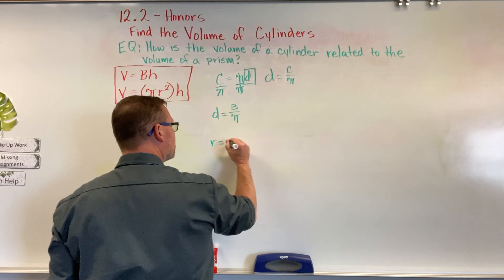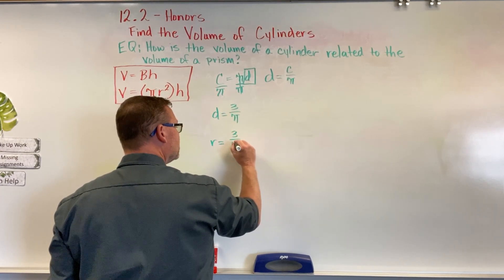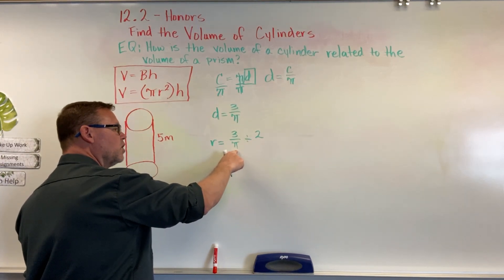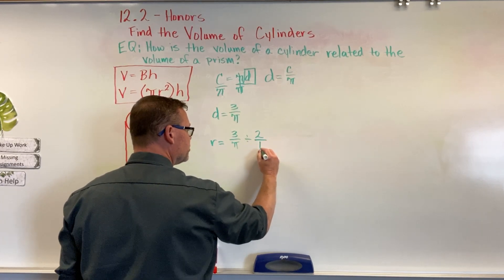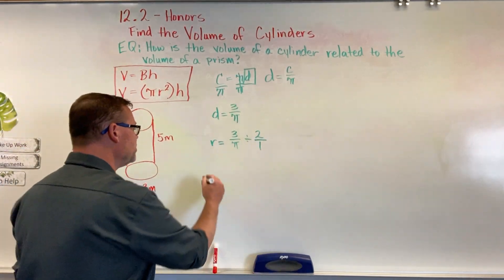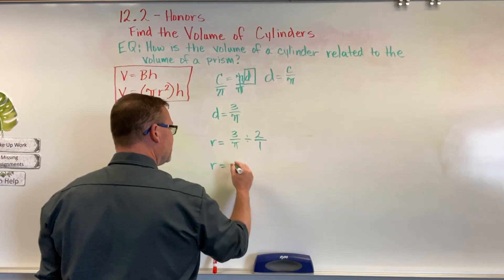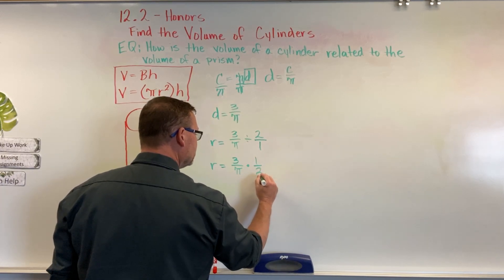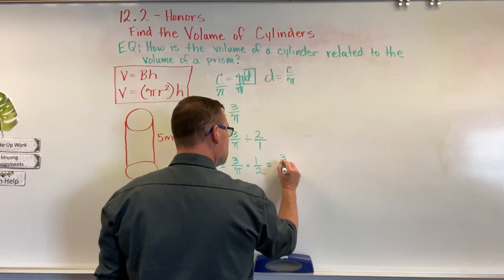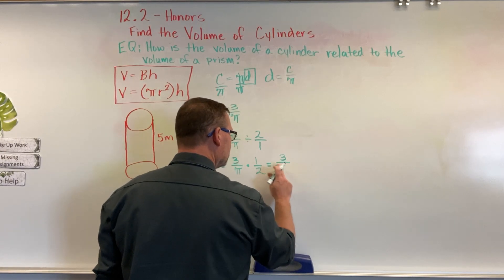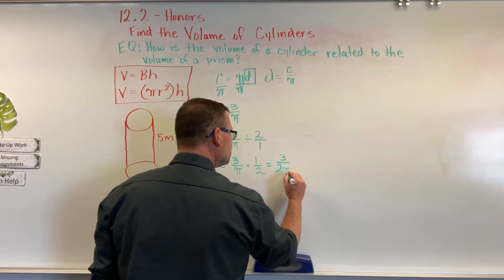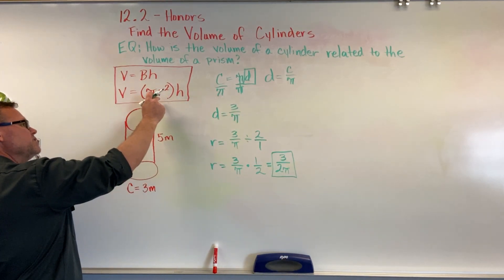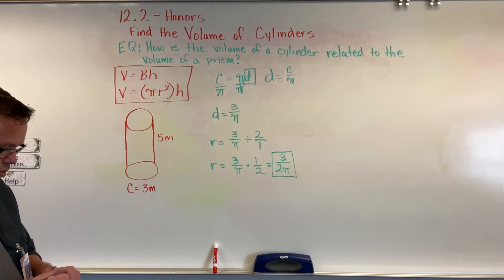So, we need to find the radius. I'm going to take 3 over pi and divide it by 2. Now, I put the 2 up here because if we have a fraction, we want to make everything a fraction. That was one of the things I taught you guys. I'm going to put that over 1. We don't divide fractions, we multiply by the reciprocal. So, the radius equals 3 over pi multiplied by 1 half. In other words, our radius equals 3 over 2pi. So now we have our radius. That allows us to plug it in here and figure out what the volume is.